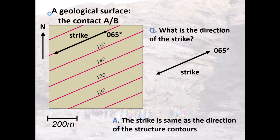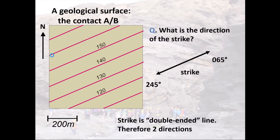If your map has a north arrow, we can measure clockwise from north to get the angle between the north arrow and our structural contour. In this example, we get an angle of 65 degrees, which we give as a three-figure number: 065. Because strike can have two directions, if it's striking 065, it's also striking 180 degrees the other way — so 245.